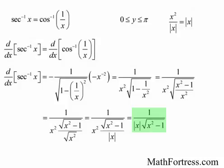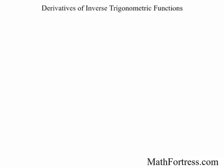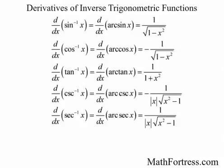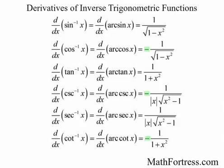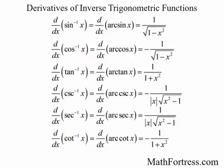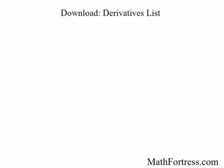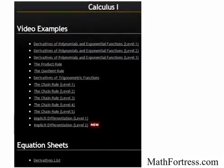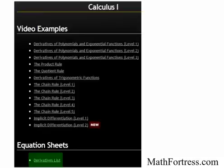The derivative of inverse cosecant can be found in the same manner — try it as an exercise and compare with the following table. Here we have the derivatives of all the inverse trigonometric functions. Notice that the negative sign goes with the co-functions: specifically inverse cosine, cosecant, and cotangent. The inverse trigonometric functions that occur most frequently are inverse sine, cosine, and tangent. You can download a copy of all the derivatives learned so far under the equation sheets section on the same site. In our next video, we will practice using these new derivative rules by going over some examples.